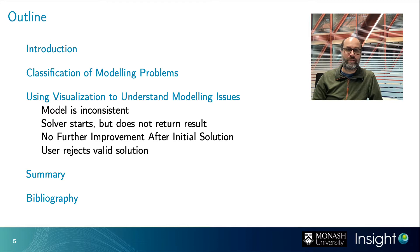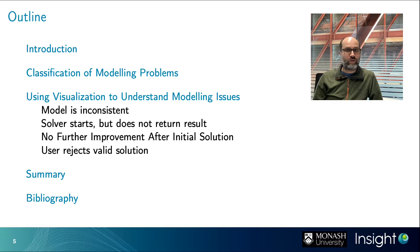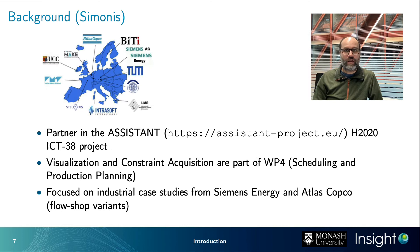Here's an overview of what we're going to cover. We'll start with a classification of modeling problems — all the issues that might arise when modeling an industrial real-world optimization problem. We'll cover four areas: the model is inconsistent, the solver starts but doesn't return a result, there's no further improvement after an initial solution, or a user rejects a solution the solver thinks is valid.